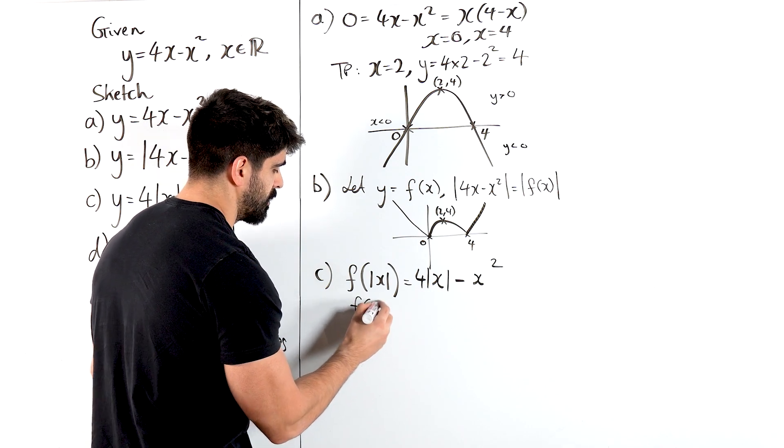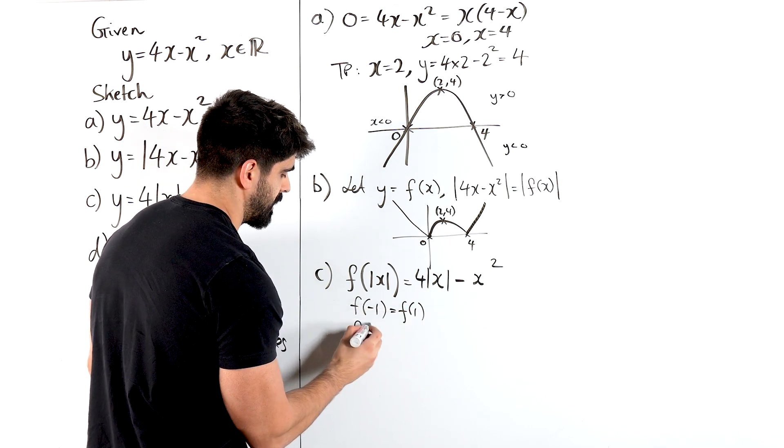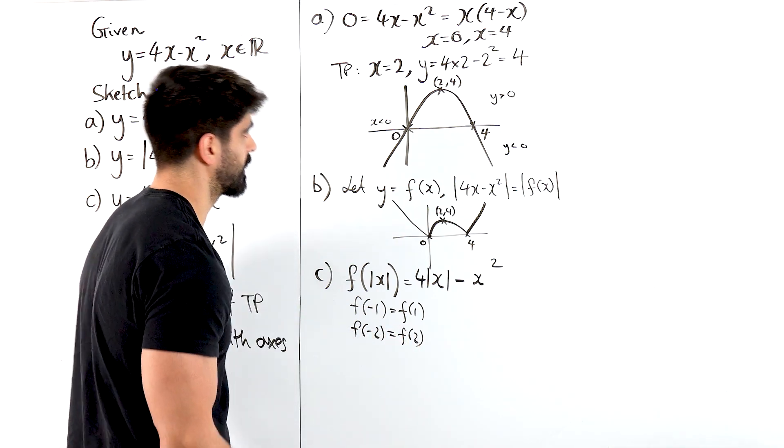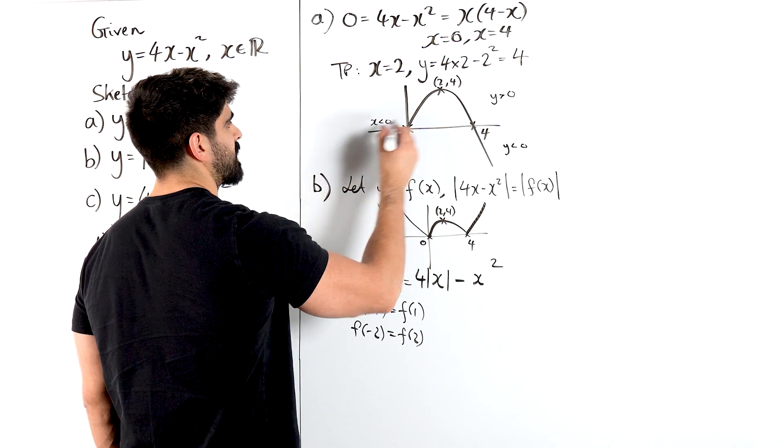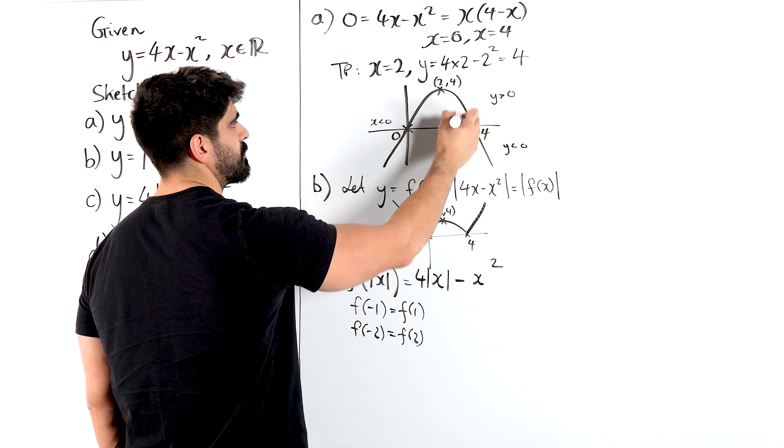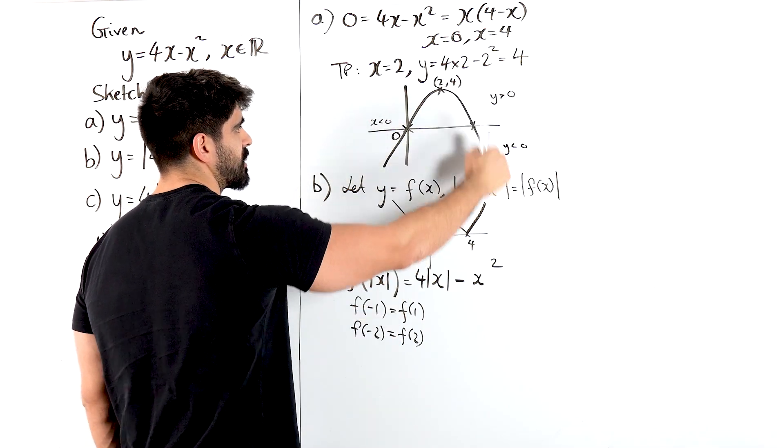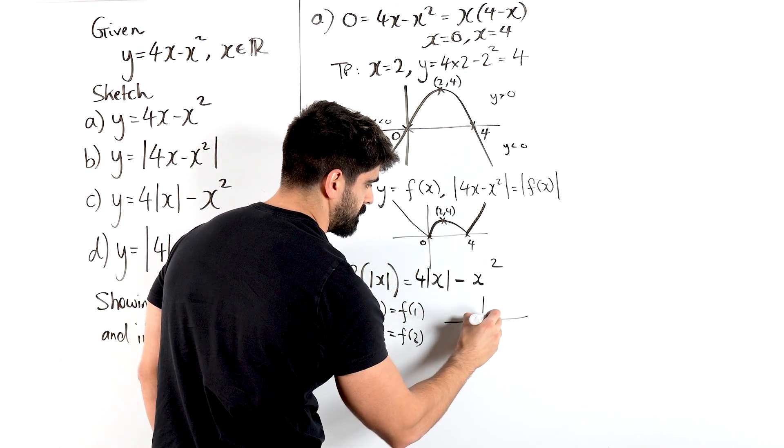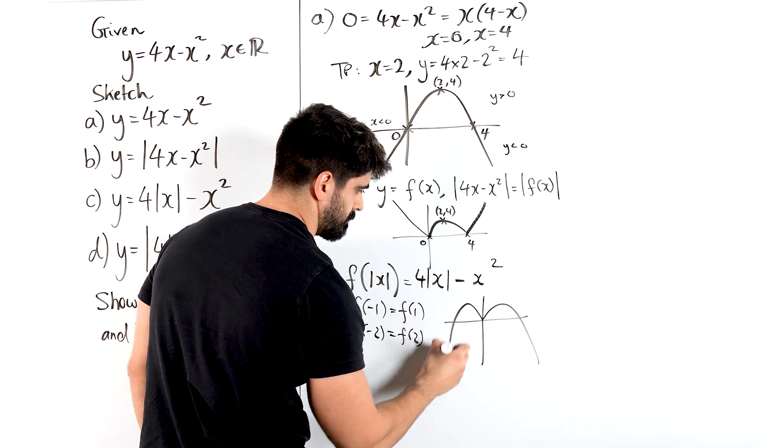So f of minus 1 is the same as f of 1. f of minus 2 is the same as f of 2. So all of these negative sides are just the exact same as the positive side. So this section here gets reflected to the other side. It's going to look like an M shape.